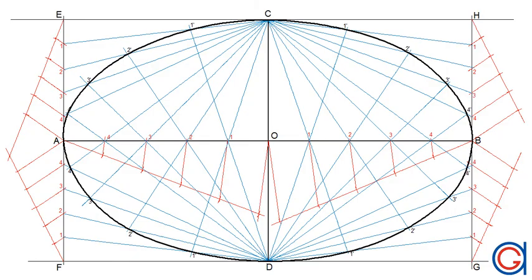Now to complete the ellipse, we can join all the points using a French ruler or by freehand — whichever method you prefer. Use a darker pencil to complete the drawing. Thank you, I hope this video has helped you. Please press like and subscribe to our YouTube channel.